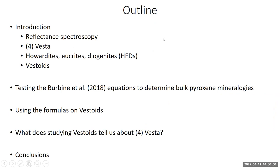The outline of my talk: I'm going to first give a slight introduction to reflectance spectroscopy, then talk about 4-Vesta, then the meteorites — Howardites, Eucrites, and Diogenites — then Vestoids. Then I'll discuss equations I developed to determine the average pyroxene mineralogy of an HED from their reflectance spectra after calculating band centers, apply those formulas to Vestoids to get their bulk pyroxene chemistries, and then discuss what the study of Vestoids tells us about Vesta.